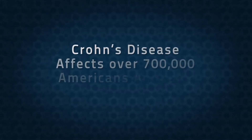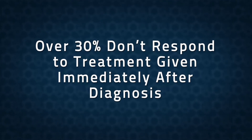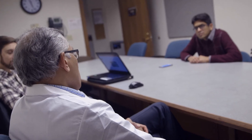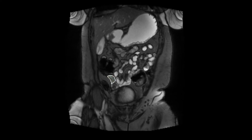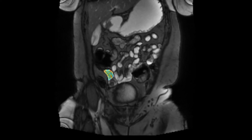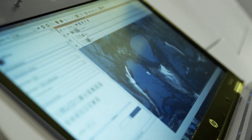The other project we have is in Crohn's disease. Crohn's disease affects over 700,000 Americans annually. It's a chronic, lifelong disease requiring ongoing medication. Over 30% of patients don't actually respond to treatment given immediately after diagnosis. The reason is clinicians don't have a very good way of determining how severe or the exact phenotype of the disease, because of how inaccessible it is to most procedures they perform. What we're proposing is to use MRIs to identify exactly where the disease is, provide an indication of how severe it is, and tell them whether the treatment is going to work for this patient or not.